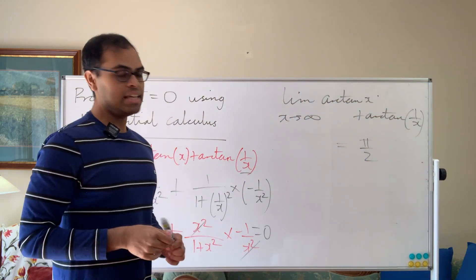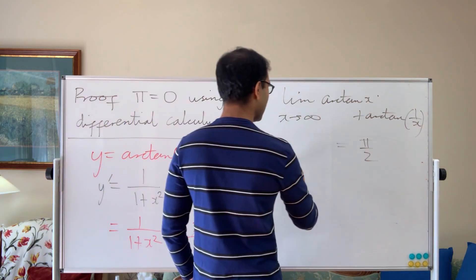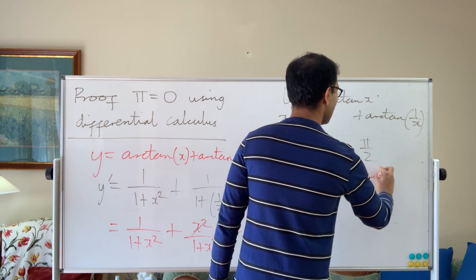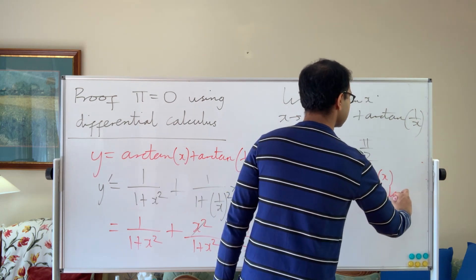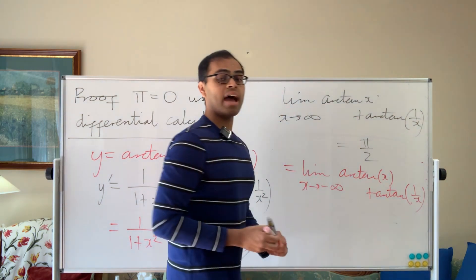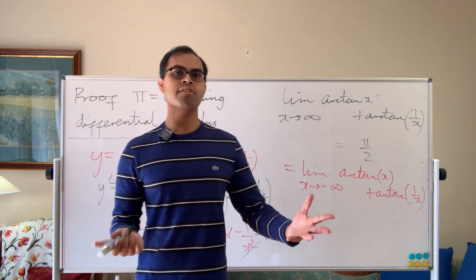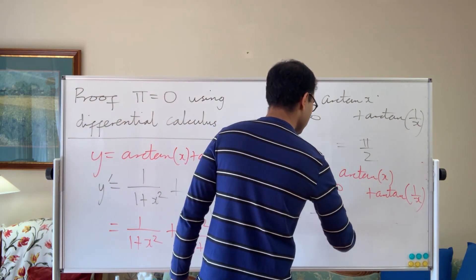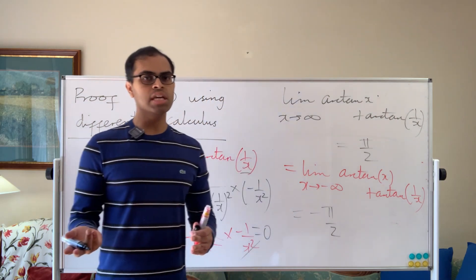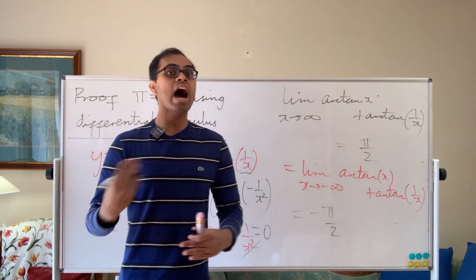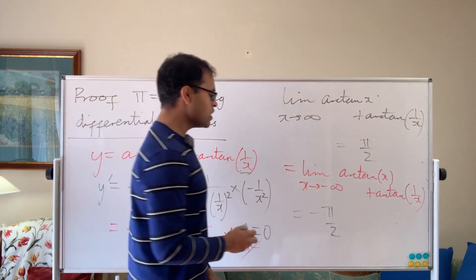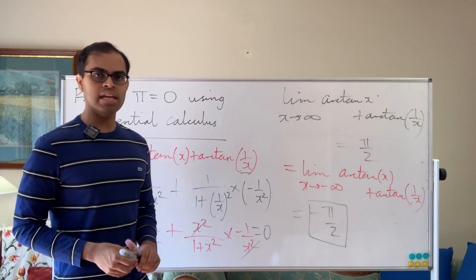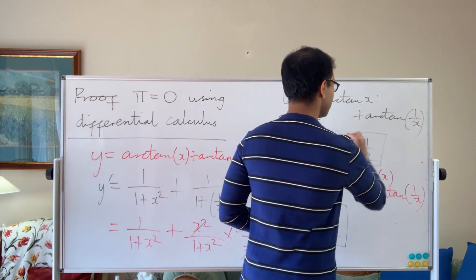On the other hand, since it's a constant function, this must equal the limit as x goes to negative infinity of arctan x plus arctan 1 over x. As x goes to negative infinity, arctan approaches negative pi over two, and 1 over x goes to zero so arctan of 1 over x goes to zero. So this limit equals negative pi over two. Therefore pi over two equals negative pi over two, which implies pi equals zero.